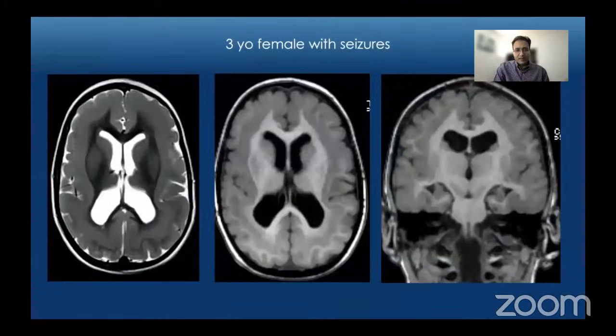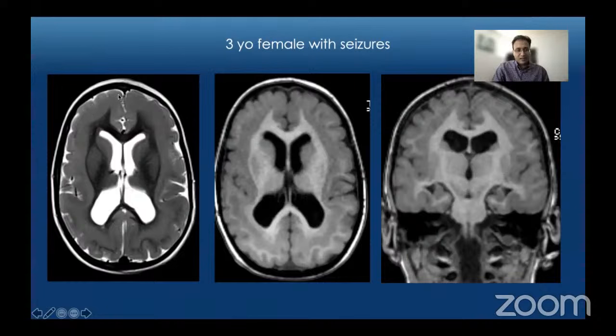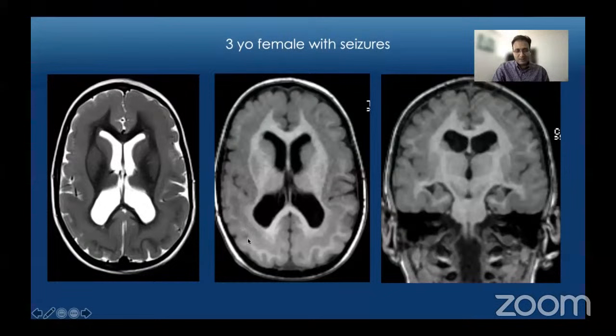Case number four: a three-year-old female presenting with seizures. On axial T2 and T1-weighted images we see an abnormal gyral and sulcal pattern with broadening of the gyri, very shallow sulci, and associated cortical thickening. In the posterior region there is a band of white matter separating somewhat normal-appearing cortex from an additional band of gray matter. This is seen better on T1-weighted images: relatively normal cortex posteriorly, a band of white matter, then another band of gray matter — anteriorly it looks more like diffuse cortical thickening.